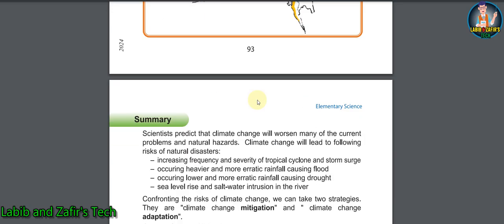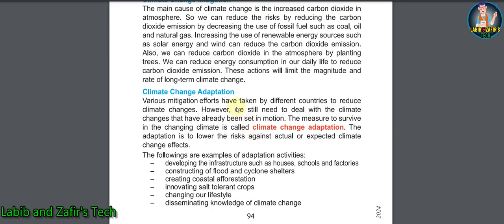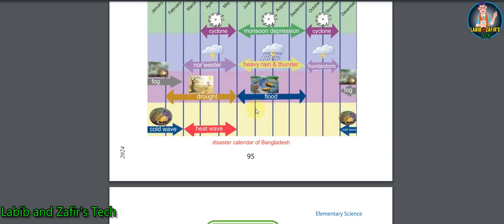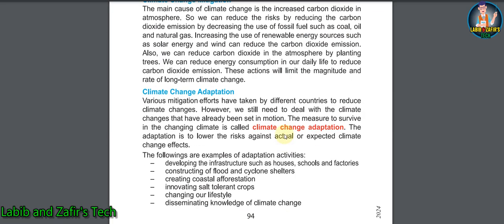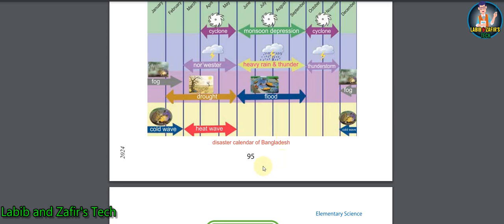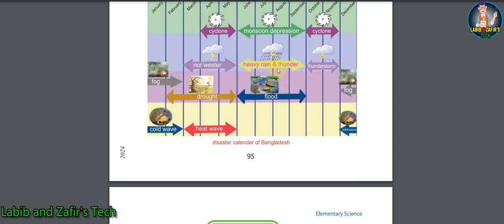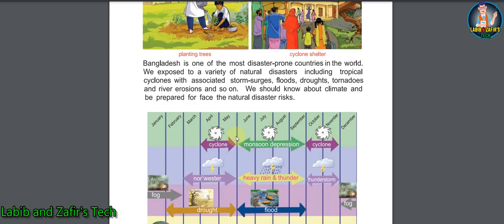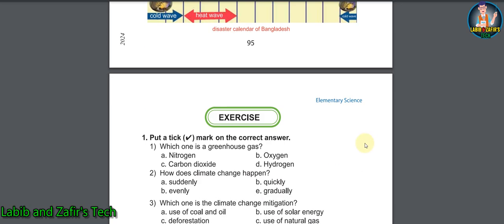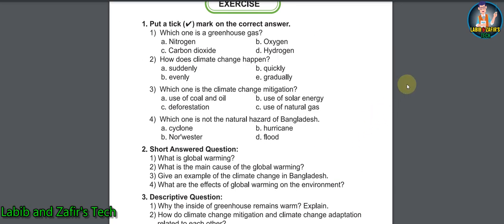Then human activities and global warming, observation facts of global warming, etc. In the third lesson, we'll know about the climate change of our country Bangladesh — mitigation, adaptation, and how we can mitigate this climate change. On page 95 we will get a chart about the disaster calendar of Bangladesh. For example, cyclone happens in April to May and October to November; flood, heavy rain, and thunder occur from June to September; and there is also cold wave and heat wave between January, February, and December.